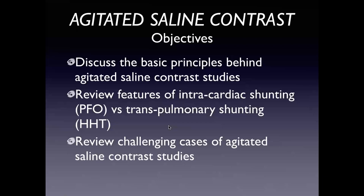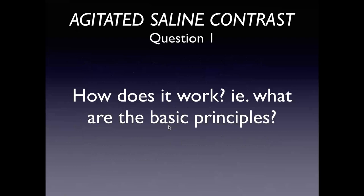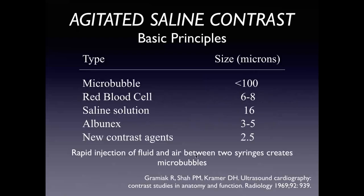How does saline contrast actually work? When you think about microbubbles or bubbles in general, the first thing to consider is size. A microbubble by definition is less than 100 microns in diameter. As a reference point, red cells — which flow freely through the circulation — are anywhere from six to eight microns. When we do agitated saline contrast, bubbles tend to be a little bit larger, about 16 microns or more in diameter, with a wide range.